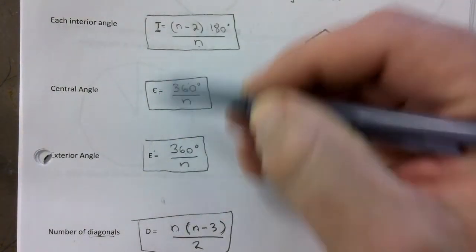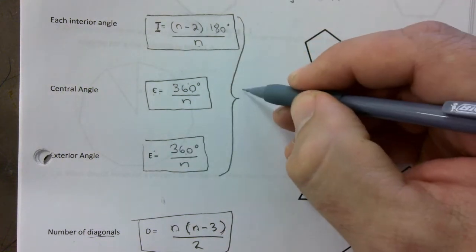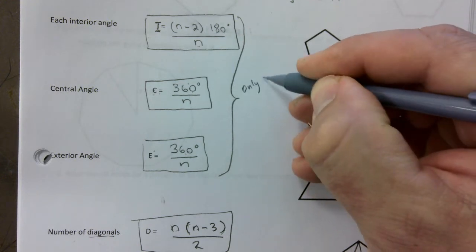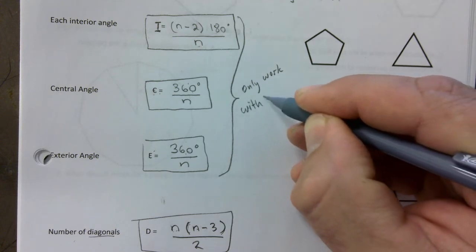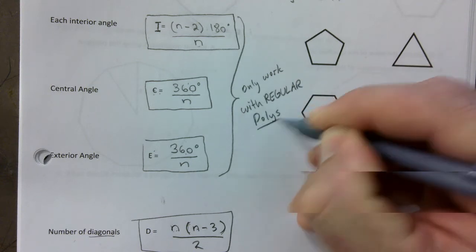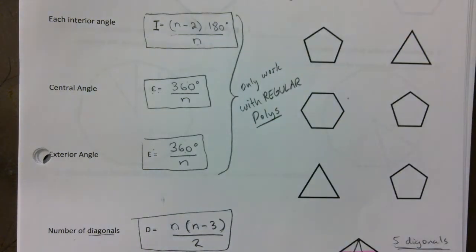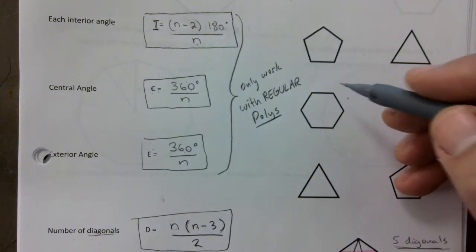Think of ICE — Interior, Central, and Exterior. These three formulas only work with regular polygons. Write that down: they do not work if it's an irregular polygon. The other two formulas — sum of interior angles and number of diagonals — do work with both regular and irregular polygons.